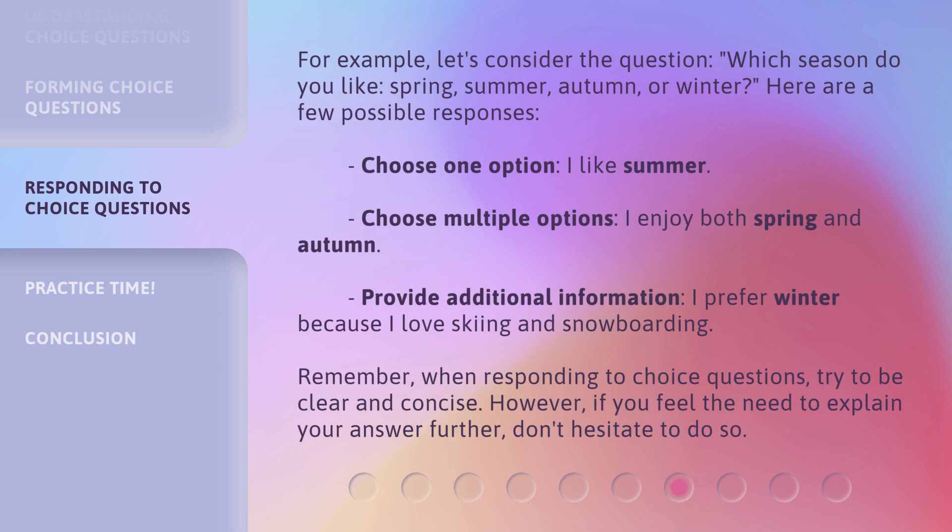For example, let's consider the question: Which season do you like, spring, summer, autumn, or winter? Here are a few possible responses. Choosing one option: I like summer. Choosing multiple options: I enjoy both spring and autumn. Providing additional information: I prefer winter because I love skiing and snowboarding.